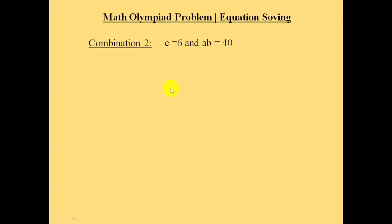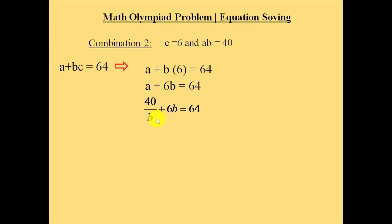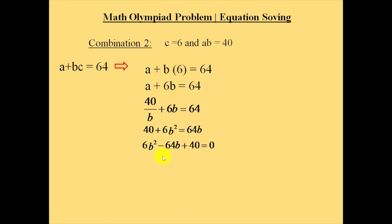Let's consider the second combination where c equals 6 and a into b equals 40. Taking equation 3 and substituting c equals 6 gives a plus 6b equals 64. From a into b equals 40, a equals 40 by b. Substituting gives 40 plus 6b squared equals 64b, which becomes 6b squared minus 64b plus 40 equals 0.